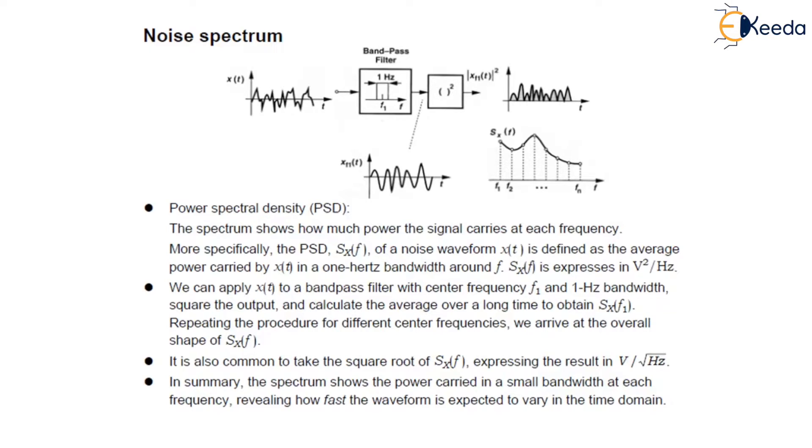Now we will see what is this power spectral density, PSD. This spectrum shows how much power the signal carries at each frequency. We can say PSD is denoted as SX(F) of a noise waveform x(t) and is defined as the average power carried by x(t) in a 1 Hz bandwidth around frequency F.